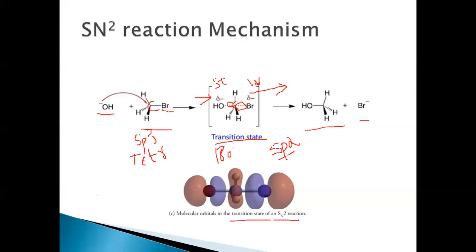In the transition state of the SN2 reaction, the central carbon has the attacking nucleophile OH minus and the leaving group Br minus each attached to one lobe of the P orbital. As this occurs, the configuration of the product methyl alcohol is completely reversed — what was the backside becomes the front side. This reversal in configuration is called Walden inversion.